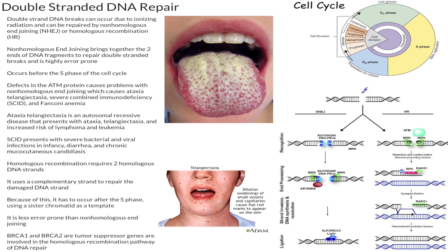Let's first talk about ataxia telangiectasia. This is an autosomal recessive disease that presents with ataxia — essentially difficulty walking and problems with coordination — and telangiectasias, which are shown here, which are dilation of small vessels and capillaries.